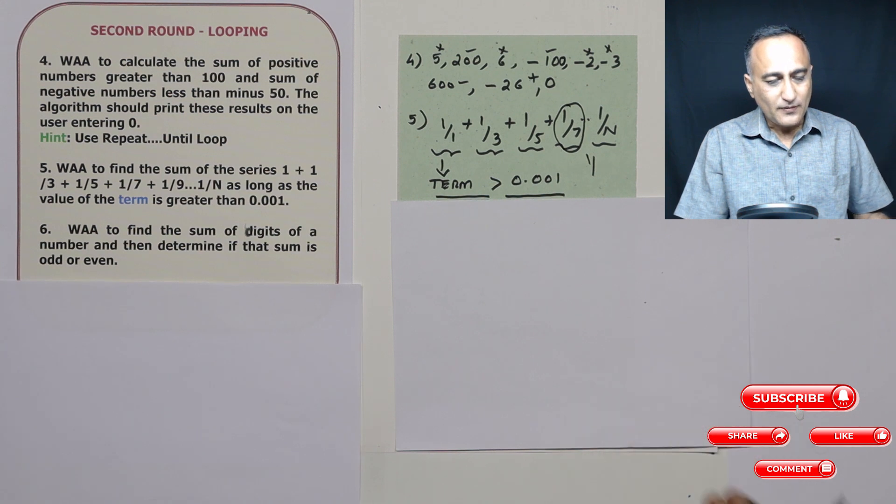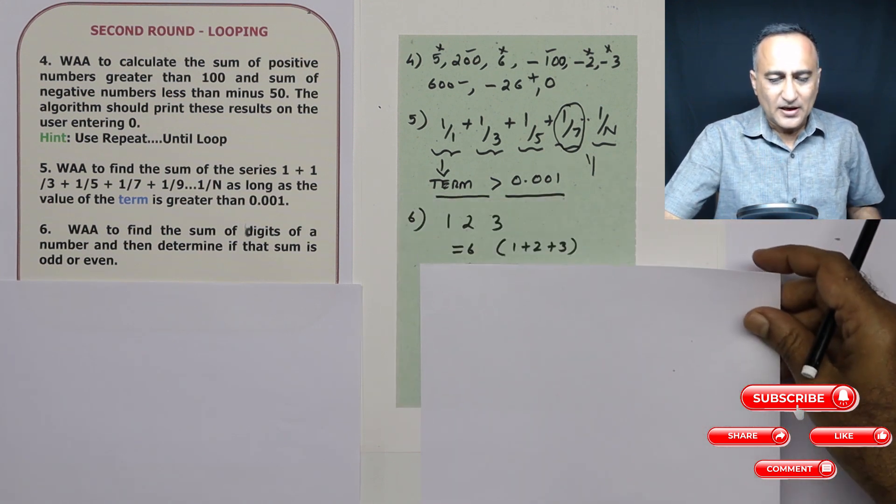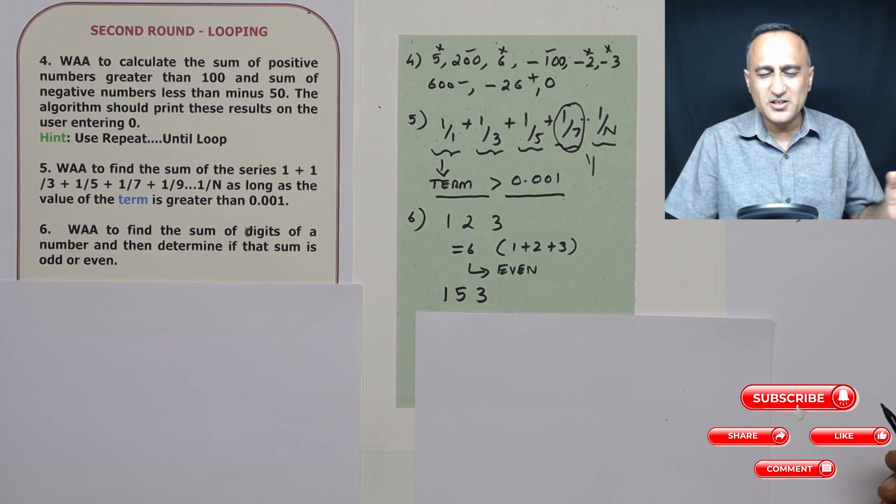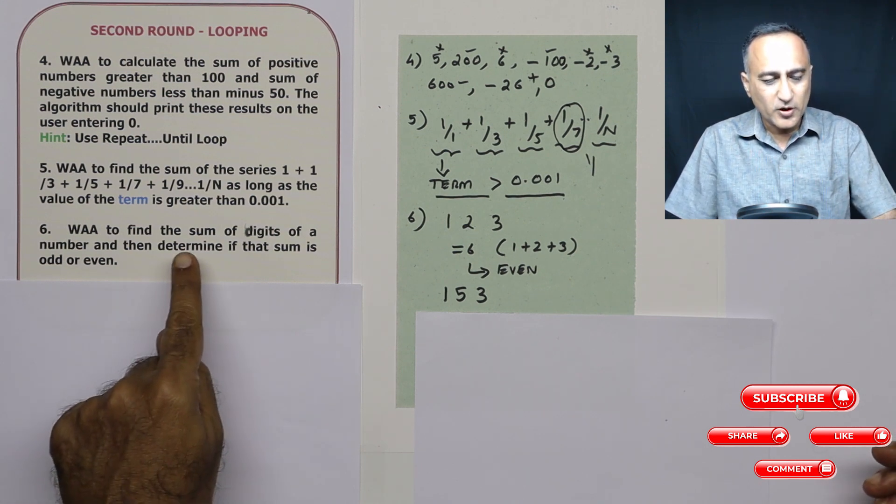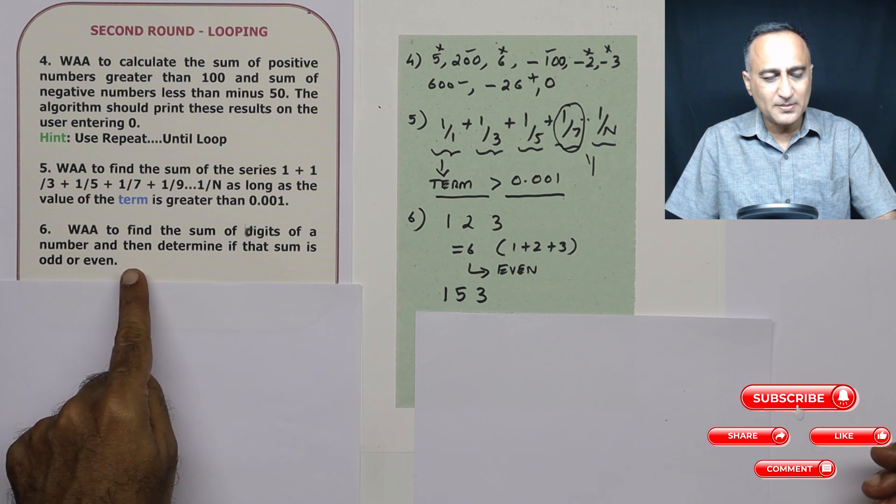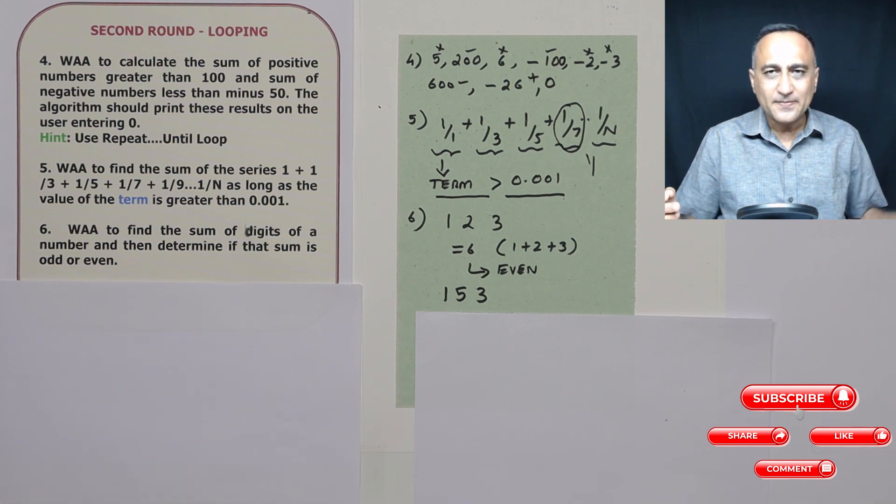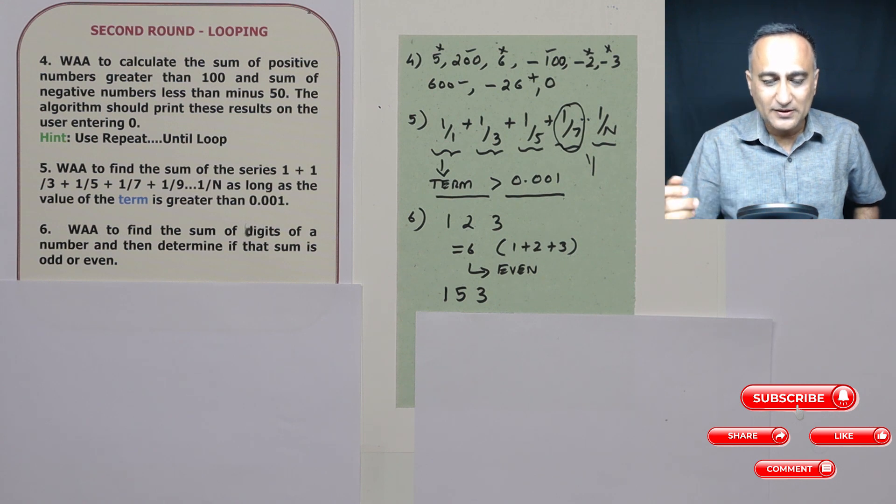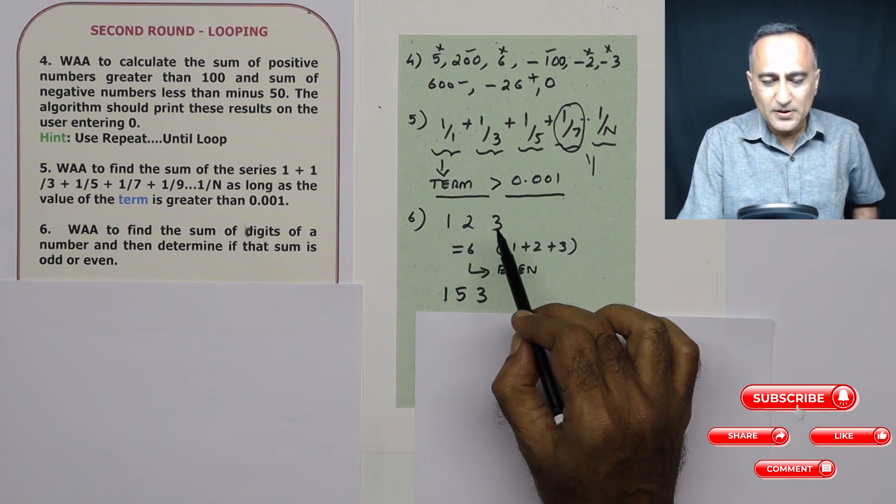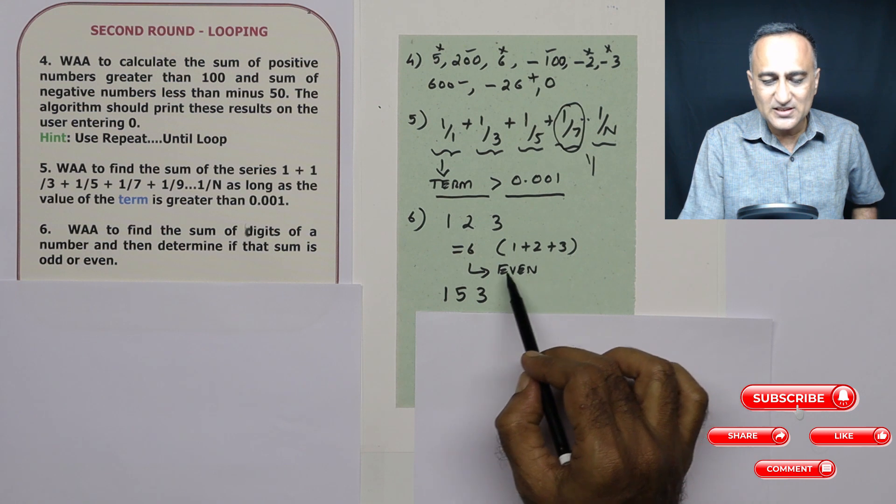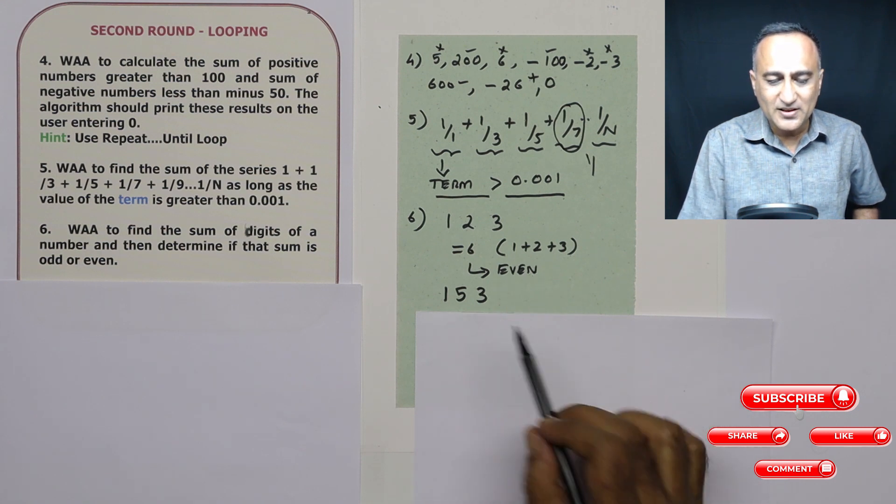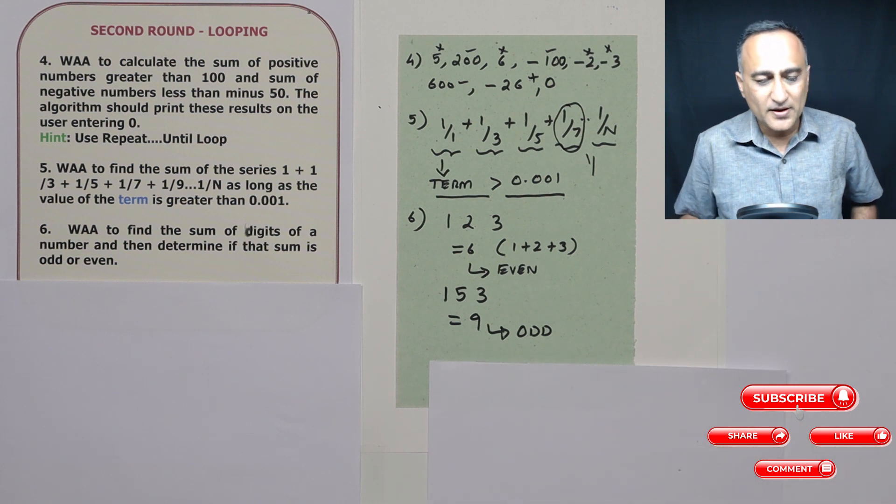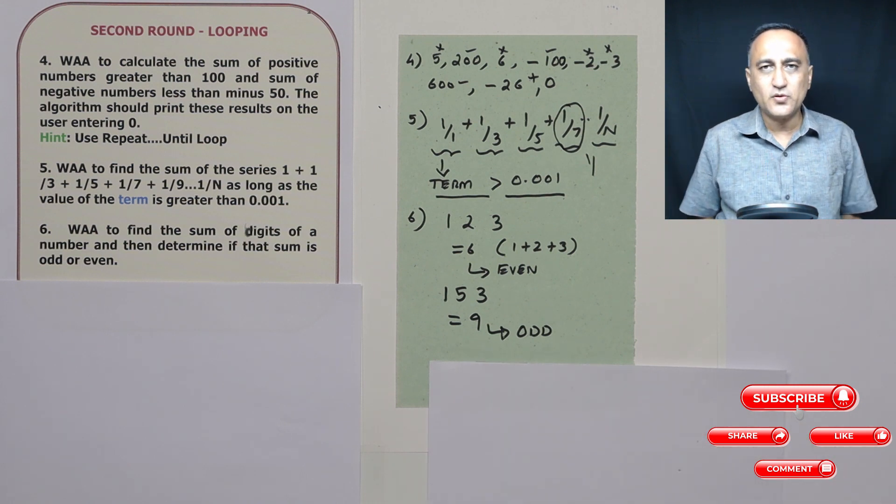Next one, really simple. You have to take an input number. It can be two digit, three digit, four digit, any number of digits. You are required to find the sum of the digits of that number and then print if the sum is odd or even. 123: 1 plus 2 plus 3 is 6, which is even. 153: 1 plus 5 plus 3 is 9, so 9 is odd. That's all it expects you to do.